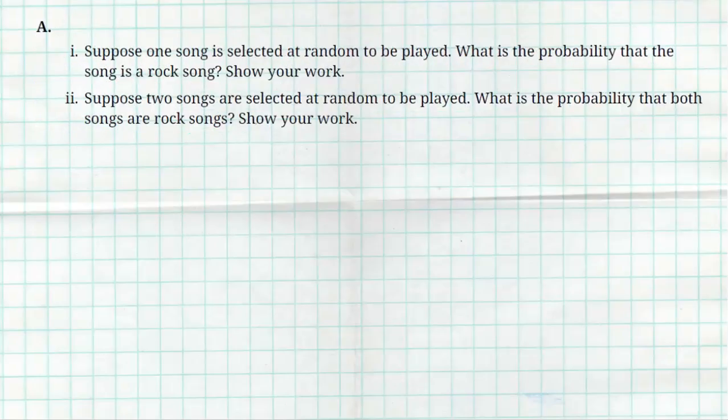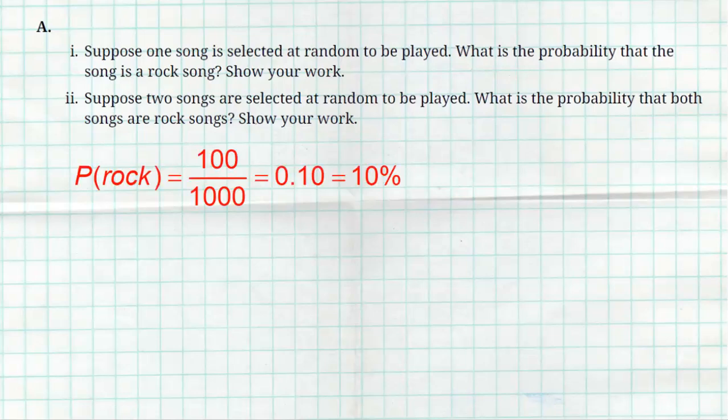Question A says, suppose one song is selected at random, what is the probability that the song is a rock song? Well that's actually really easy. We're trying to find the probability of rock song. There are 1,000 total songs, 100 of them were said to be rock songs. 100 of the 1,000 is 10%. Easy peasy.